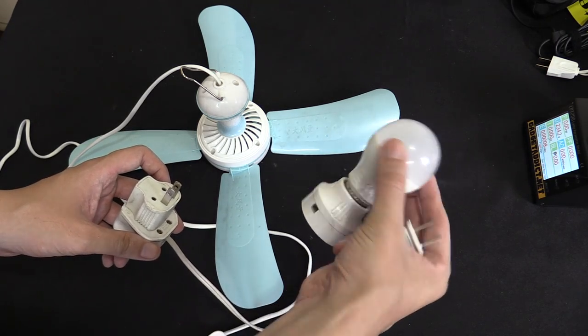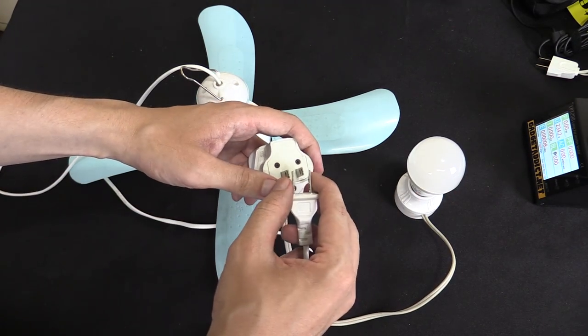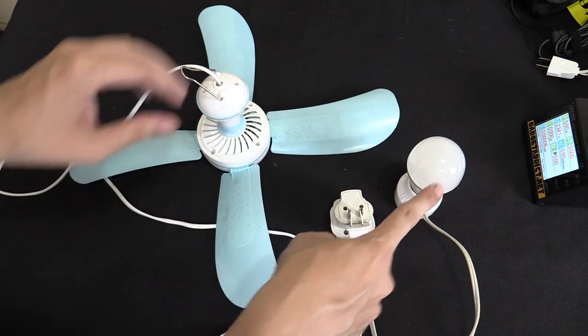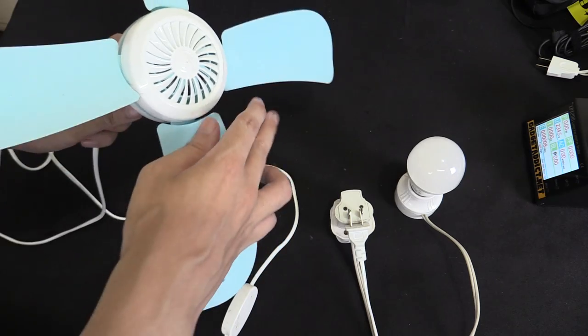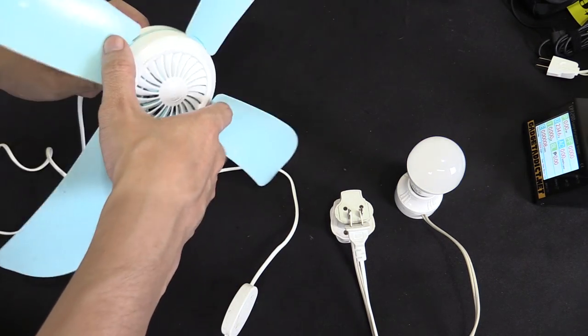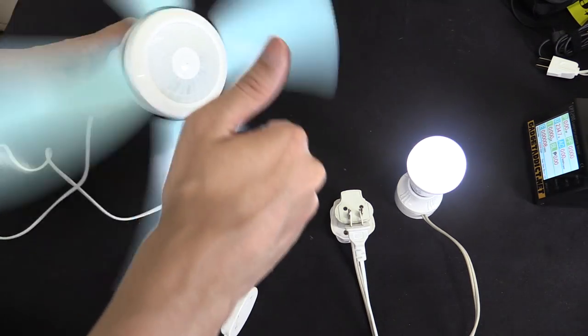So here I have a regular LED light bulb that normally plugs into your ceiling or screws into your ceiling and I'm just going to connect the pins from the fan directly to this light bulb and watch what happens when I spin the fan. See how it turns on? So we can actually use this as a kind of generator.